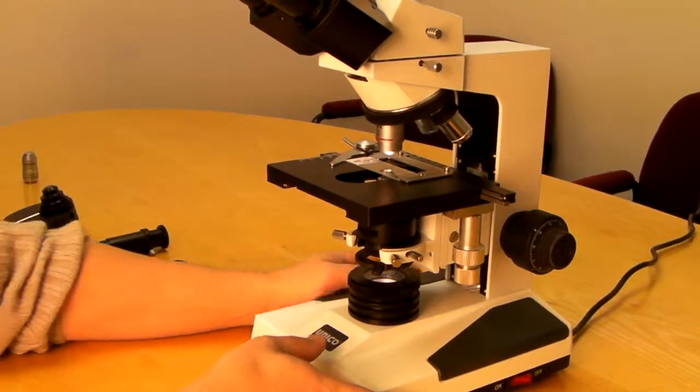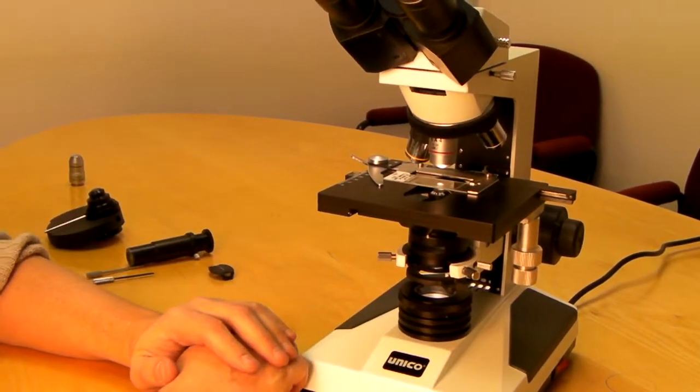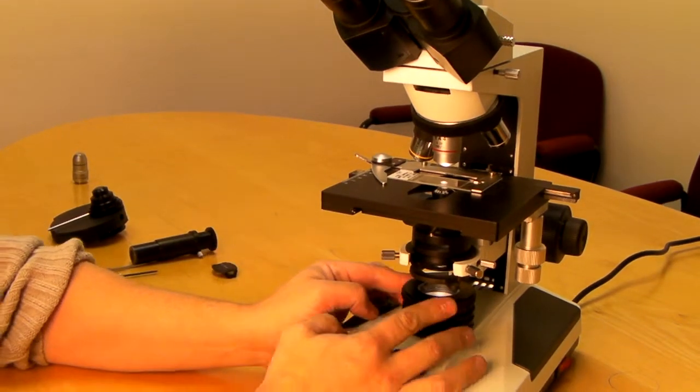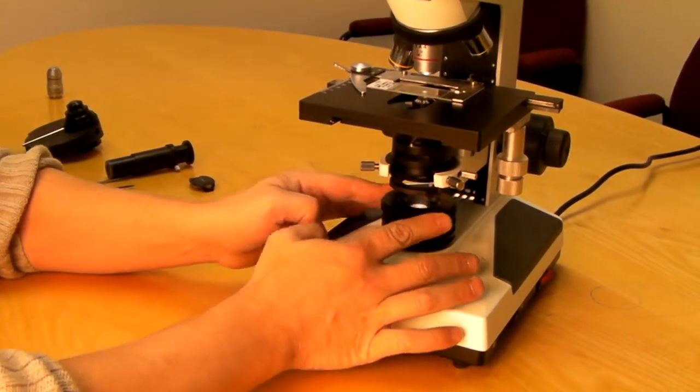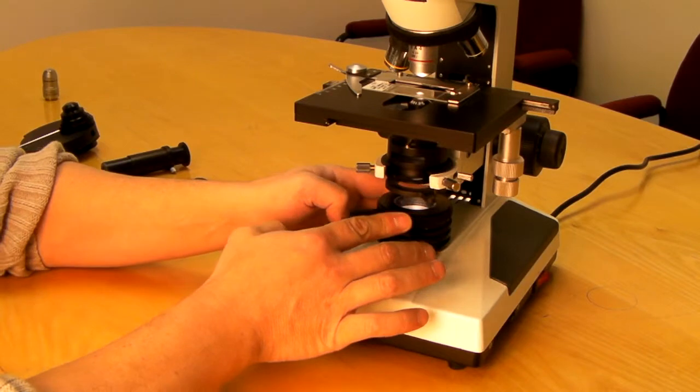Before we begin, I'd like to point out a few parts that we will be using when installing the phase set. First is a field diaphragm. This will open and close the diaphragm on this lens housing.